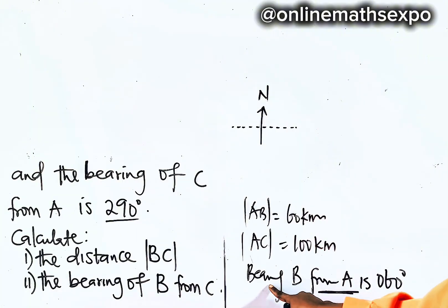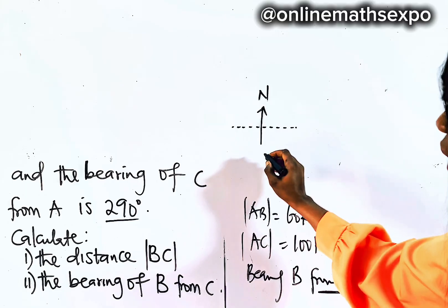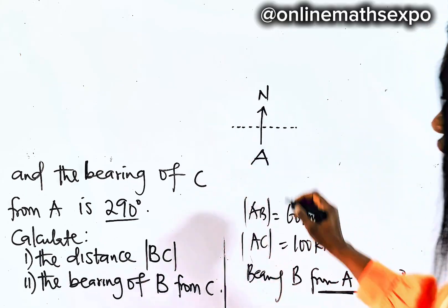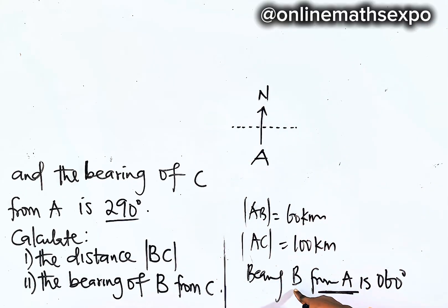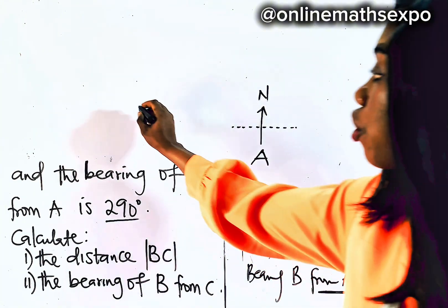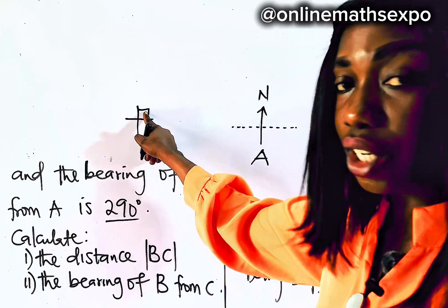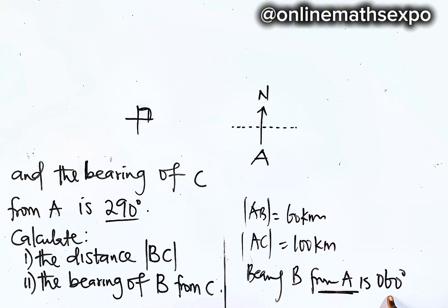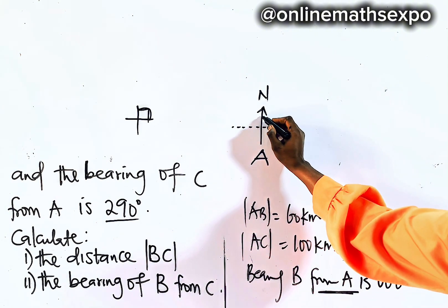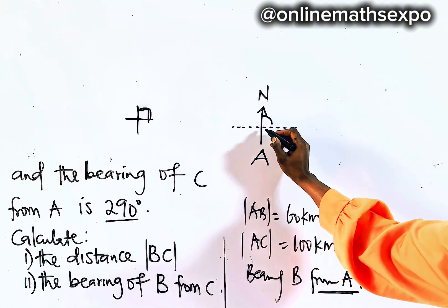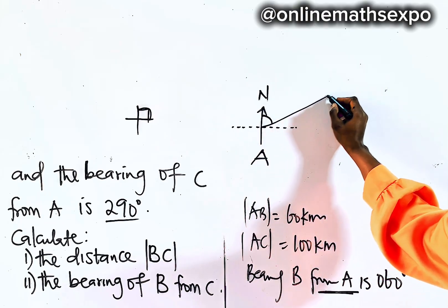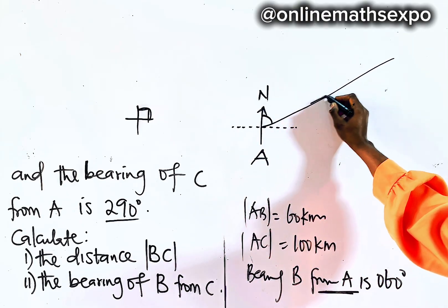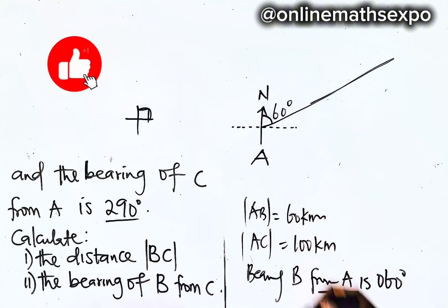We want to show the bearing of B from A — from A, that means it started from A, so we label this place A. The bearing of B from here is 60 degrees. In the first quadrant from north to east is 90, so to locate 60 degrees you move from north clockwise and stop somewhere before 90, then project it out. So here is my 60 degrees.